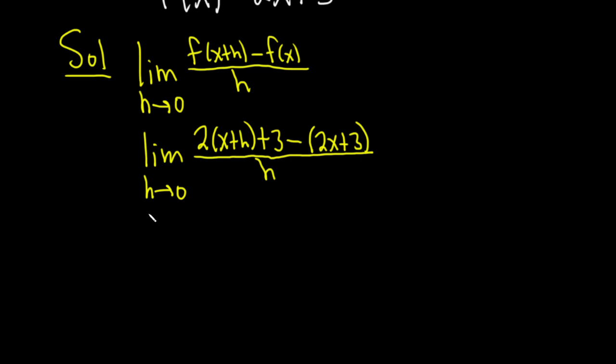Okay, so now let's keep going. This is the limit as h approaches 0. So it looks like we can do some simplification here. We can distribute this 2. So 2 times x is 2x. And then 2 times h is going to give us 2h. Okay, we have a plus 3. So far, so good.